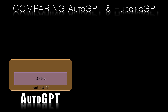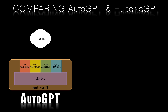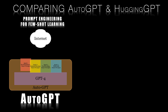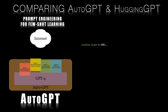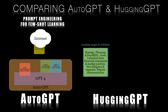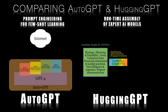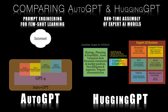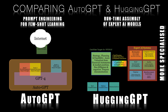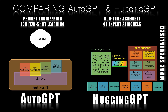Auto-GPT and Hugging-GPT are both built on the foundation of GPT-4 from OpenAI, but they follow different approaches when it comes to their architecture. Auto-GPT primarily focuses on using few-shot learning and prompt engineering to achieve its results, while Hugging-GPT relies on a collection of pre-trained expert AI models. This makes Hugging-GPT more specialized in certain tasks, while Auto-GPT is designed to be more general purpose and adaptable.